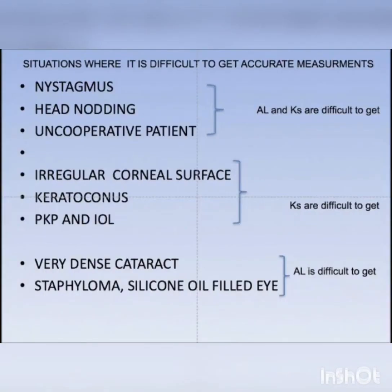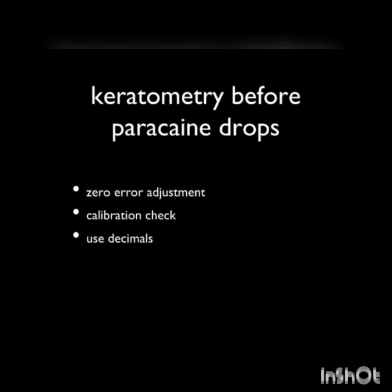We all know that there are various situations — patient-related and eye-related — which make it very difficult to get a proper biometric reading. For the major part of today's talk, I will concentrate on ultrasound biometry and manual keratometry, because I believe that the majority of doctors in India are treating our billion-plus population using these two parameters. Optical biometry has still not penetrated our community in a large way.